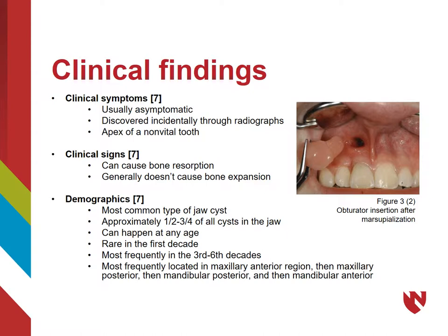Clinically, there are few symptoms to indicate the presence of a radicular cyst. They are usually asymptomatic and are often an incidental finding when taking radiographs. There will be a radiolucency present at the apex of a non-vital tooth and possibly some evidence of bone resorption. Although it is possible, radicular cysts generally do not cause expansion of the cortex.